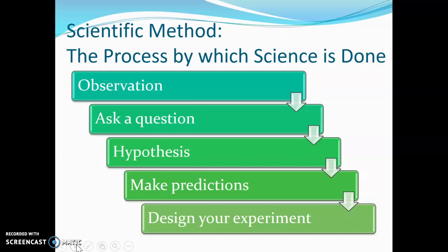With that hypothesis you make predictions. So if we hypothesize that this bird is jumping in the water in order to catch fish, we would predict that if we observe it we would see this bird coming out of the water with a fish at some point. Then you design your experiment around that — we're going to observe this bird, record the number of times it jumps in and out of the water, and record the number of times it has a fish in its mouth.